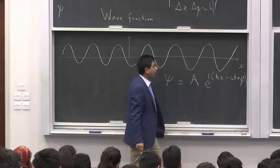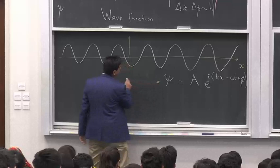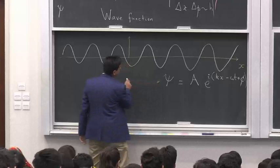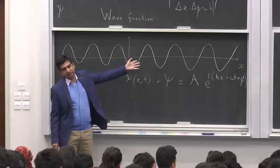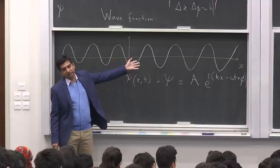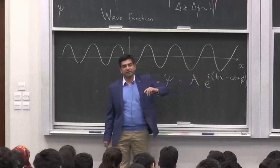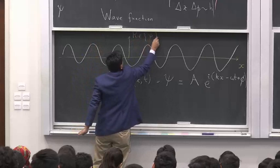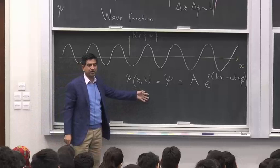What I've drawn is not the complex number itself — I can't draw a complex number like this. What this represents is either the real part or the imaginary part of ψ. The real part is A cosine of (kx − ωt + φ), and this picture could represent the real part of ψ. Or it could represent the imaginary part, which is A sine of that phase. So this could represent either the real part or the imaginary part.